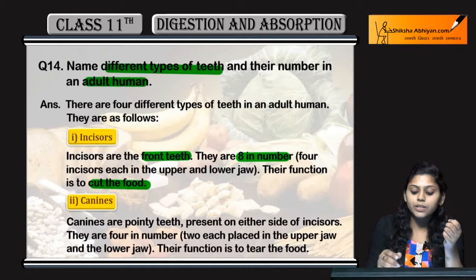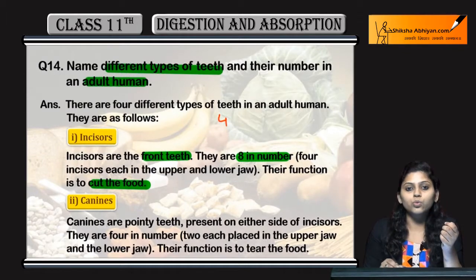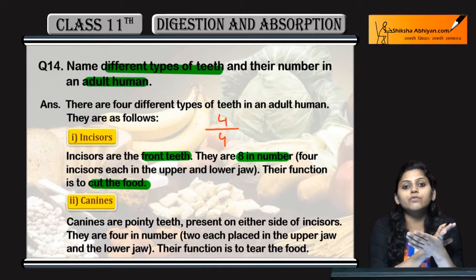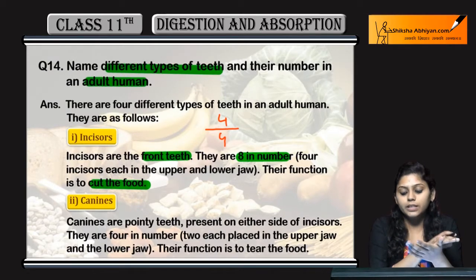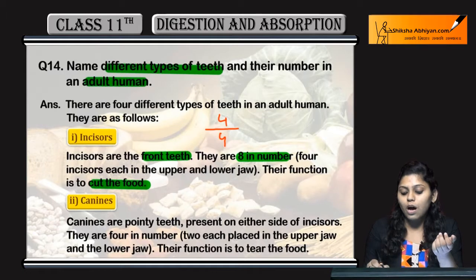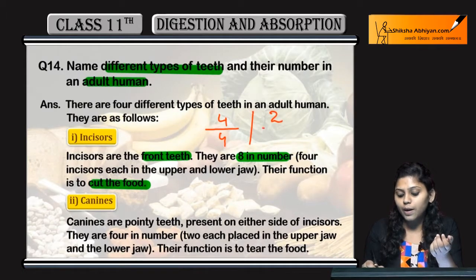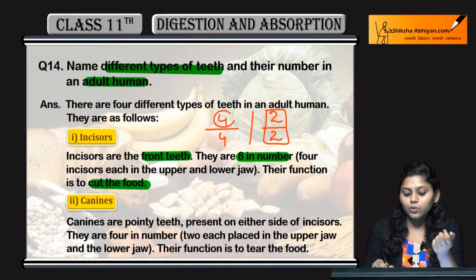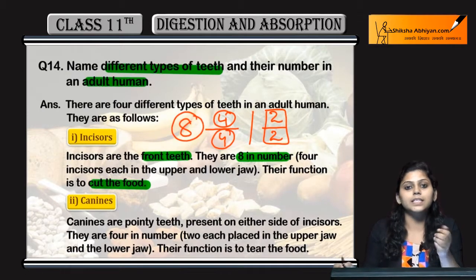Eight in number — how? Four up and four down. Half of the teeth are incisors. When we make the dental formula, we see half of the upper and lower jaw. So half is two by two. Incisors are two by two, and the total is eight.